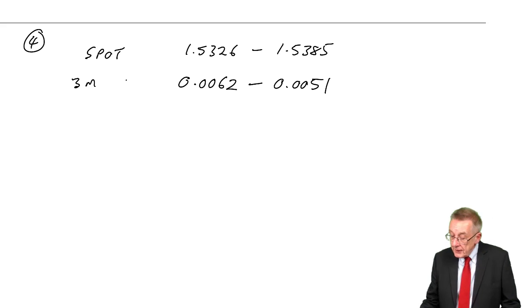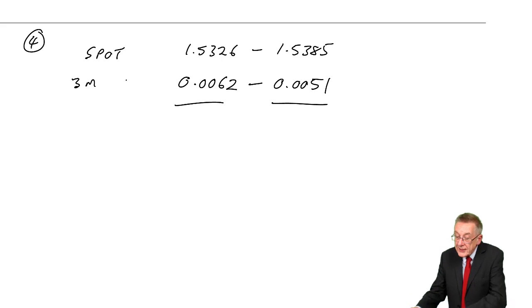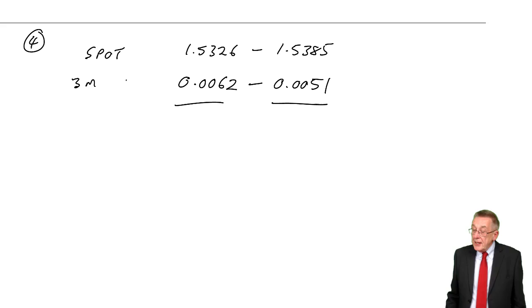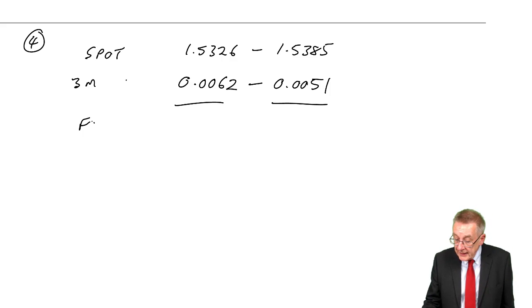The second is, the forward rate, that's the difference from spot. So the question is, to get the forward rate, are we going to add 62 or subtract it?